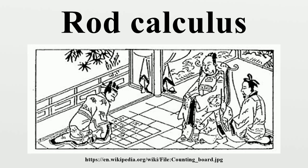Addition of fractions: one-third plus two-fifths. Put the two numerators 1 and 2 on the left side of the counting board, and the two denominators 3 and 5 on the right. Cross-multiply 1 with 5 and 2 with 3 to get 5 and 6; replace the numerators with the corresponding cross-products. Multiply the two denominators: 3 times 5 equals 15, placed at bottom right. Add the two numerators: 5 plus 6 equals 11, placed on top right. Result: one-third plus two-fifths equals eleven-fifteenths.